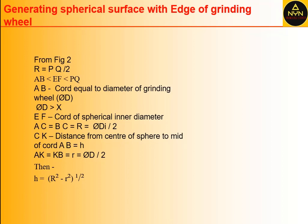AK equals AB divided by 2, equal to small r, which equals D divided by 2. Then we can define H as equal to the square root of (R² minus r²). Using this formula, we can calculate the distance of the grinding wheel face to the center of the spherical diameter. Friends, this method is very popular in the bearing industry to grind the outer ring raceway of medium and large size spherical roller bearings.